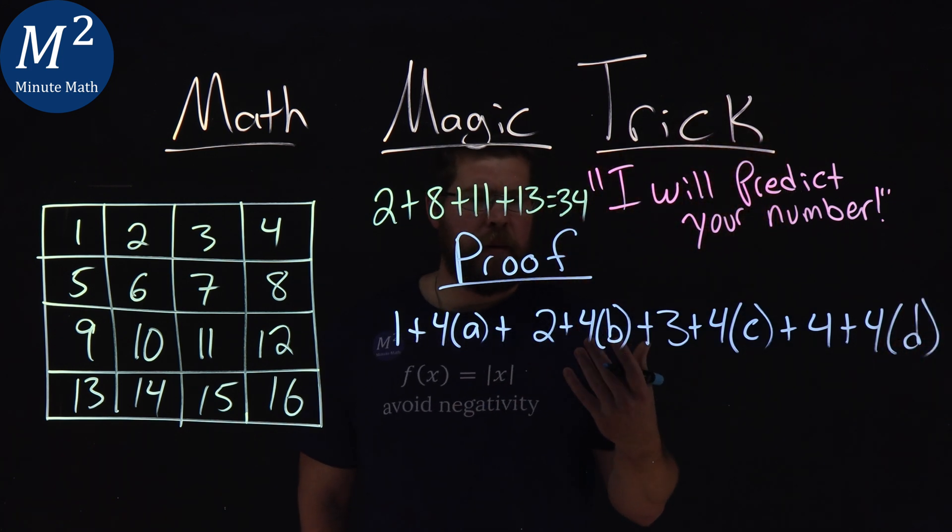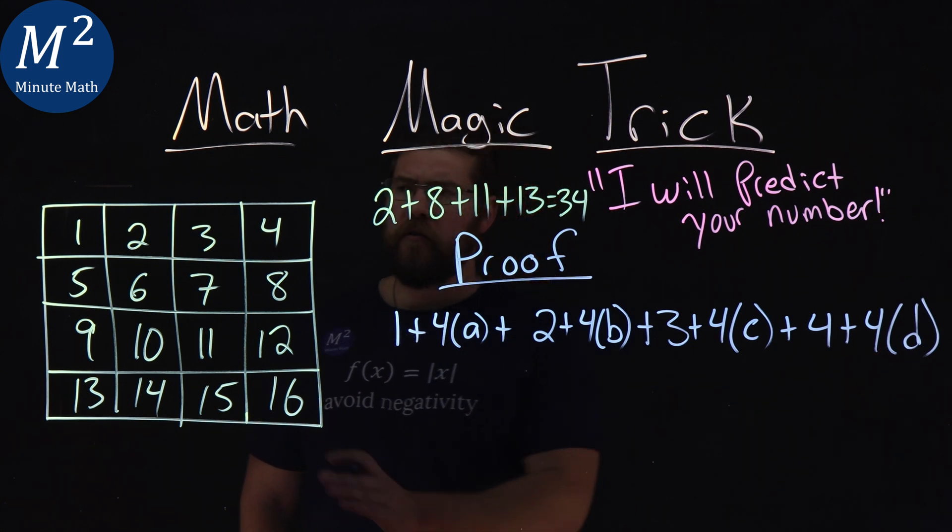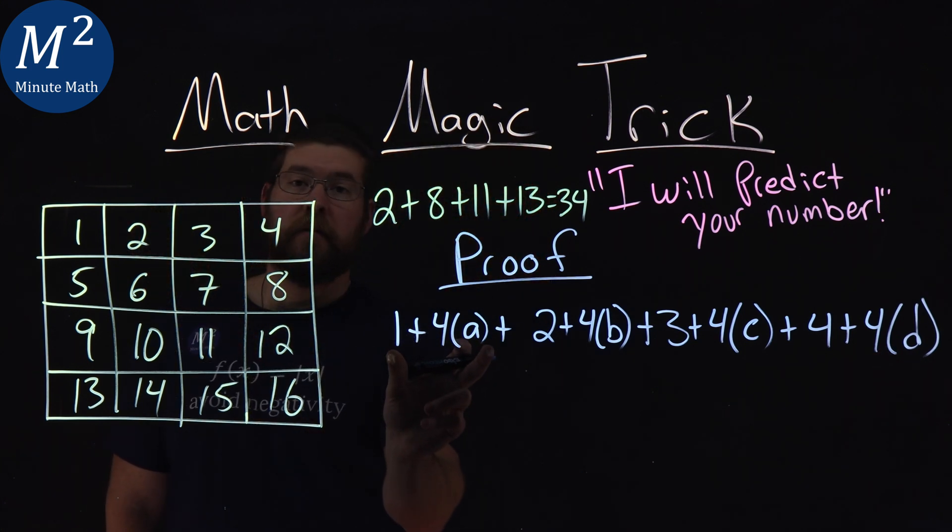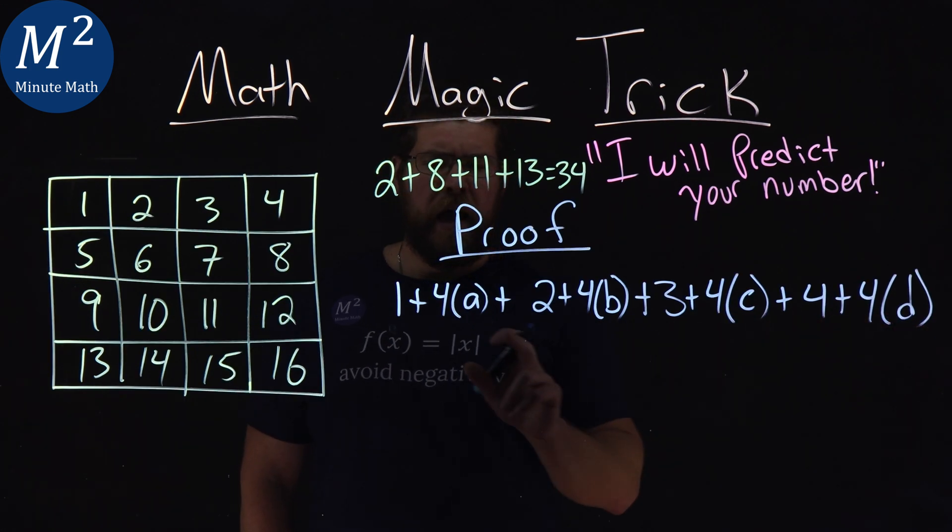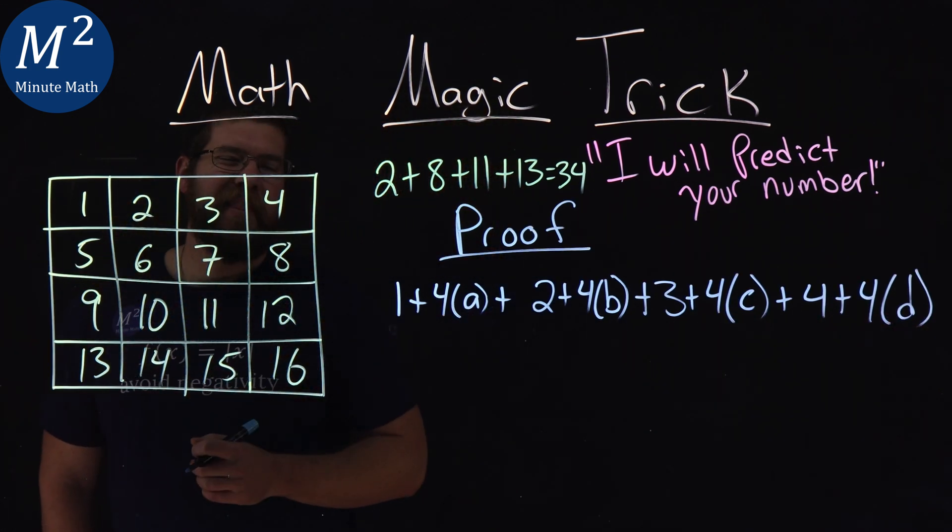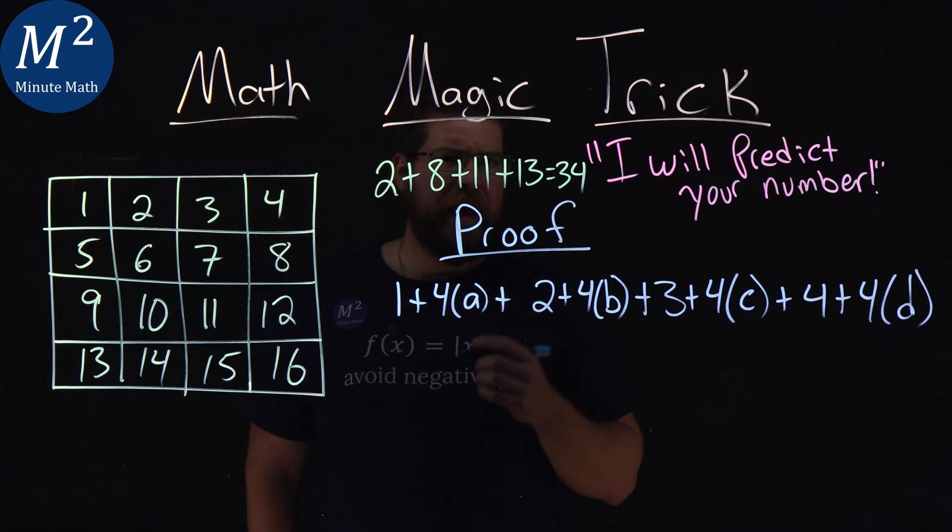Now we need to set some parameters for a, b, c, and d. Notice we've picked within each column. This represents the number in column one, column two, column three, and column four. A represents how far down that column we go, what row we're in.